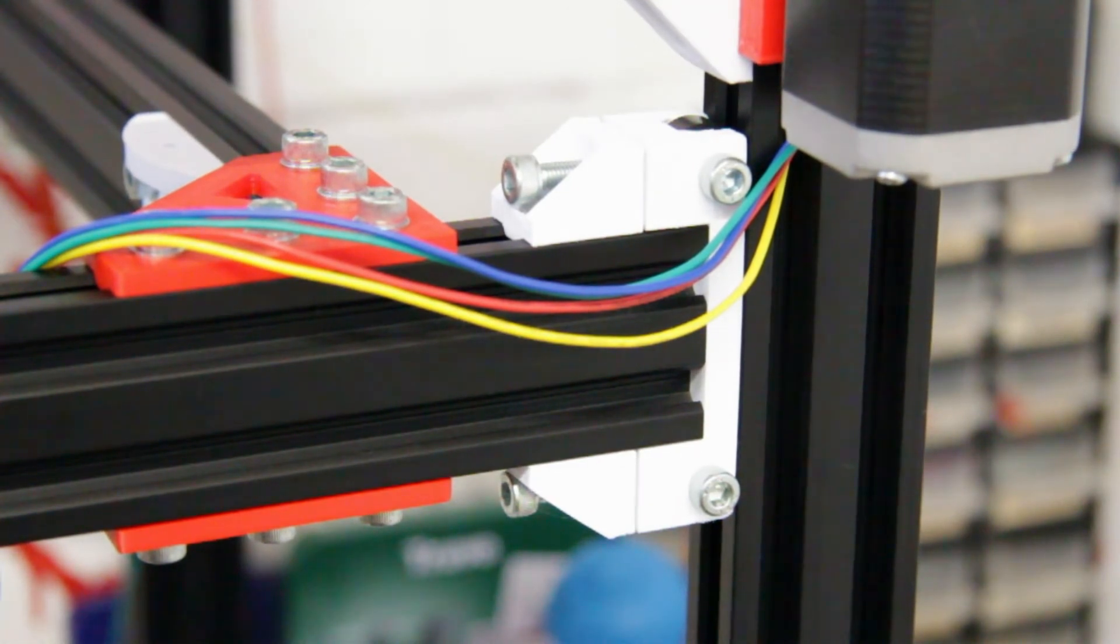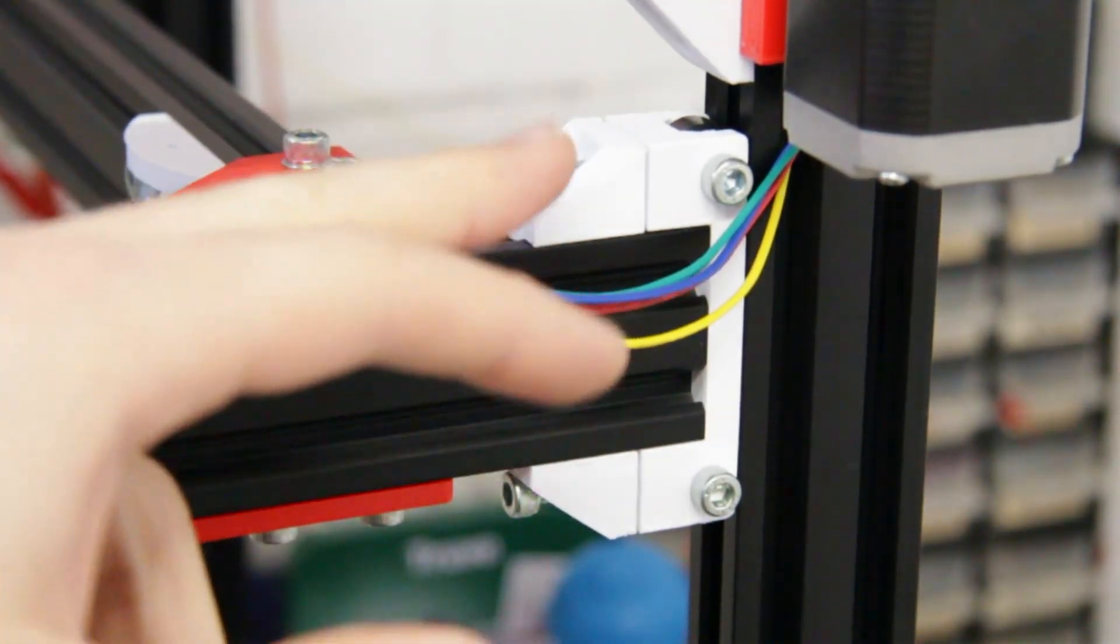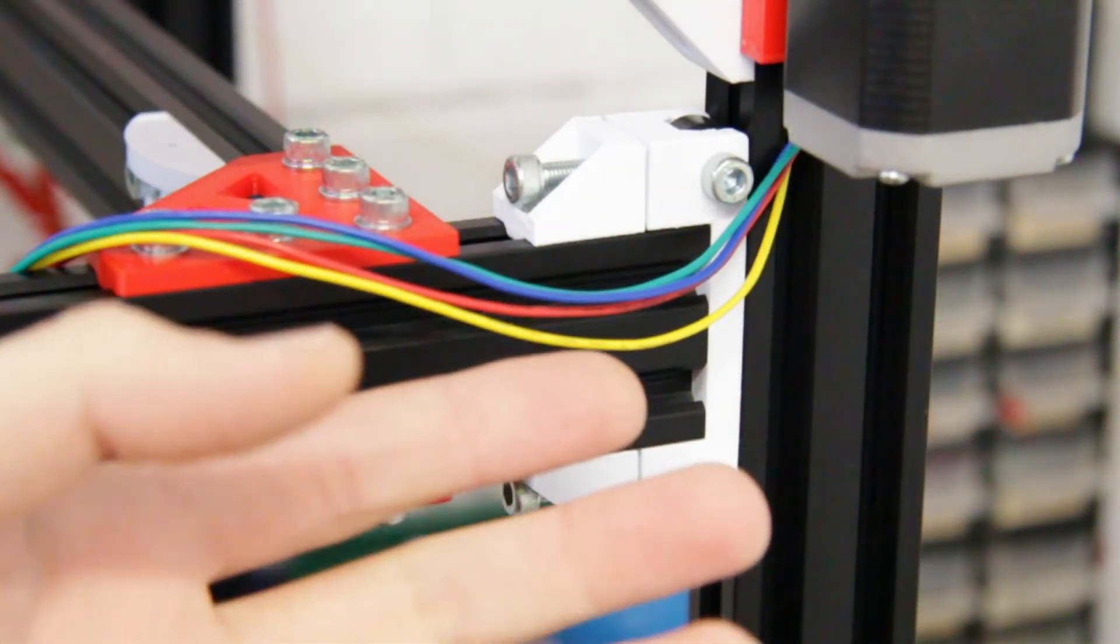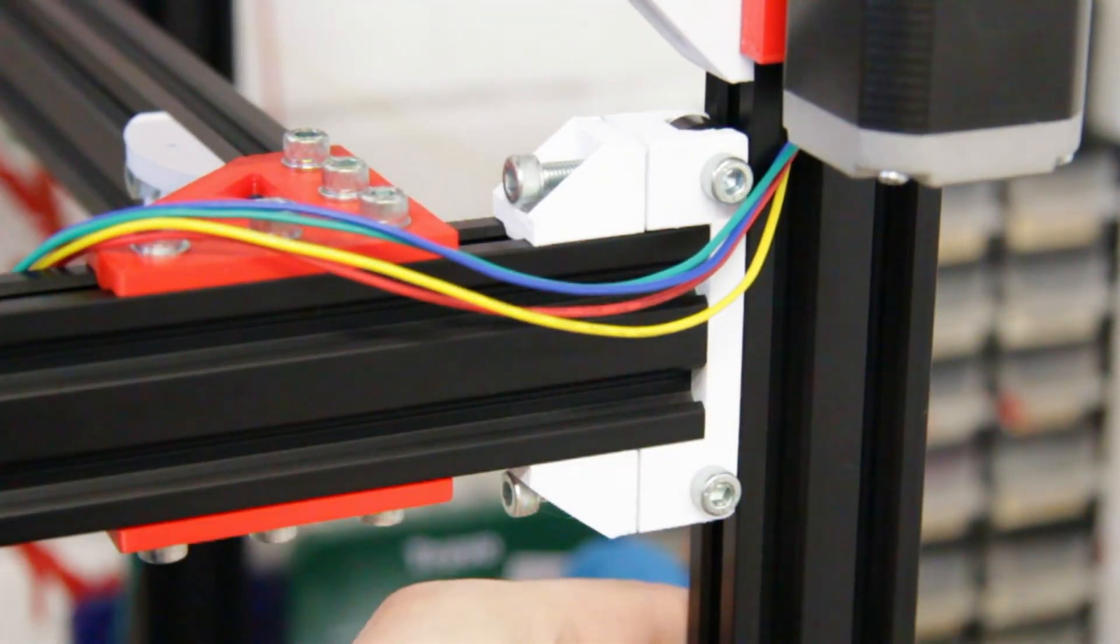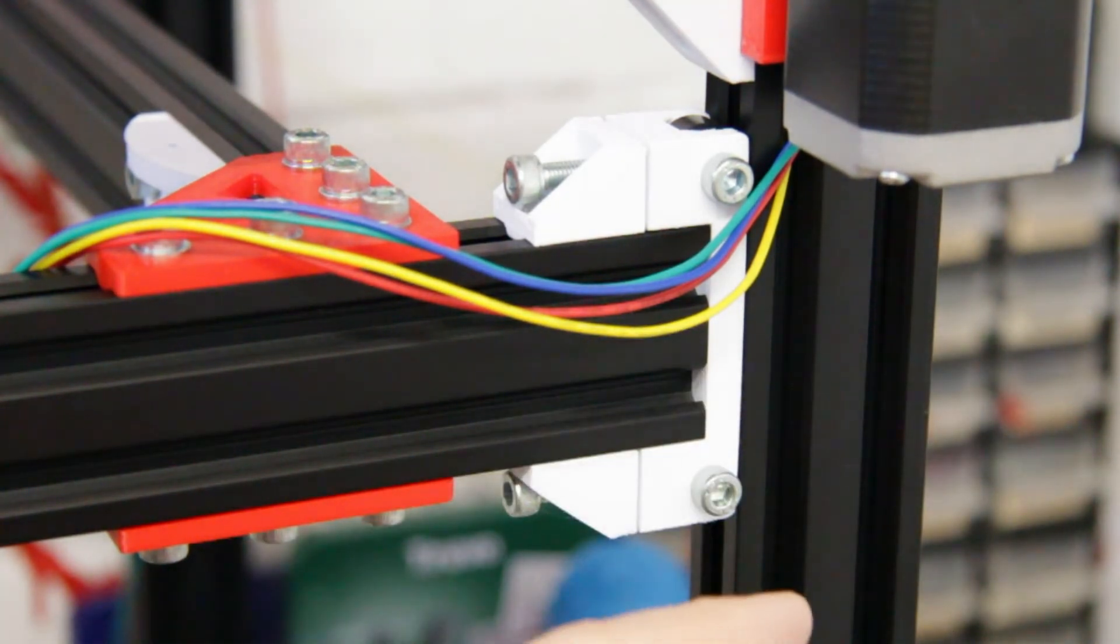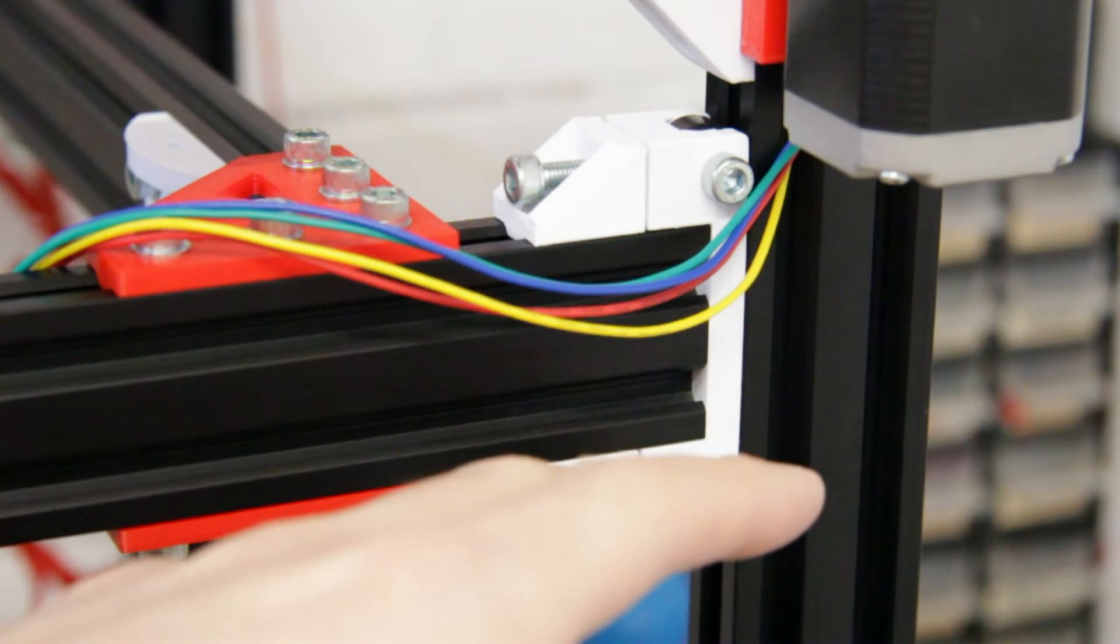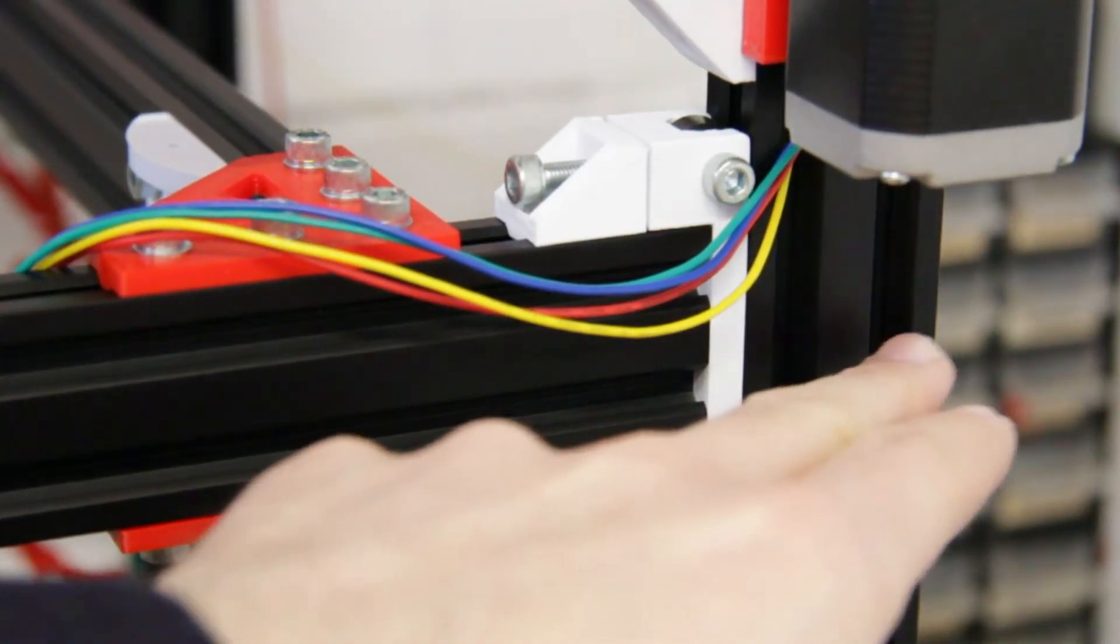Okay, so the next modification from the original build guide for the D-Bot is this part here, which is the Z-axis bed guide, I suppose you can call it. So the original Z-axis guide sort of almost wraps around the 20 by 40 extrusion and uses I think four wheels, possibly. I think there are different versions, but it's definitely a wheeled system. It uses V-slot mini V-slot wheels to ride along the extrusion.